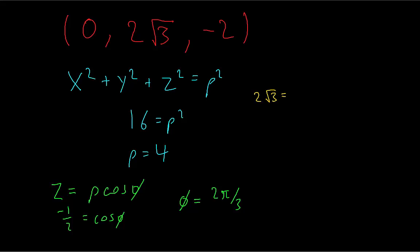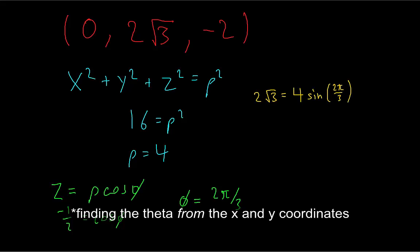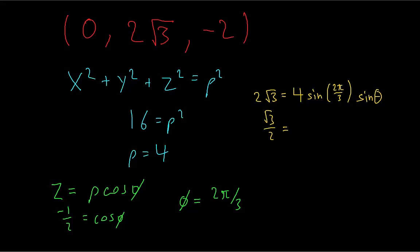Now be careful when finding the x and y coordinates because, say for example, you used the x coordinate to find theta. Then you would get that cosine theta equals 0. So you might think that theta could be either pi halves or 3 pi halves.